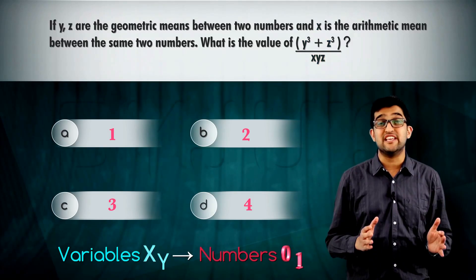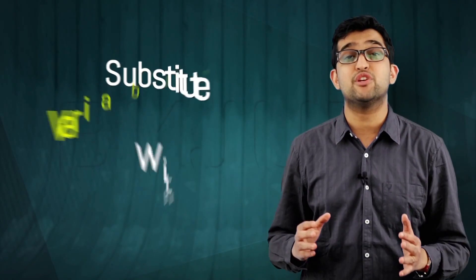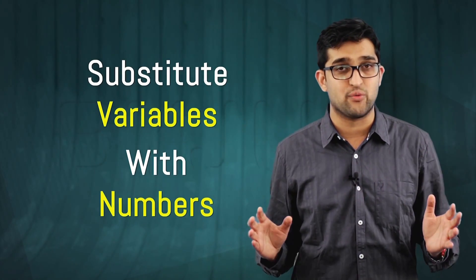There can only be one correct answer option. This should give you a hint. What if I substitute the variables with numbers which satisfy all the conditions in the question? Any substitution of variables should lead me to the correct answer option, else the question itself is wrong. So let's substitute and do this question in 30 seconds.